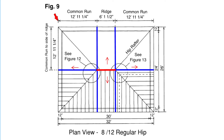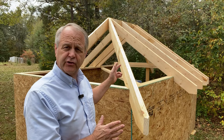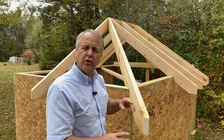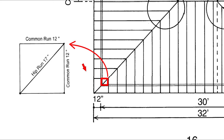I recommend getting in the habit of figuring the common rafter run to the end of the rafter tail — this is especially important on irregular or bastard hip roofs to avoid confusion. The common runs in this drawing are figured to the end of the overhang, which tells us how far to pull back for the end of our ridge. The hip rafter runs from the wall corner right up to the ridge.